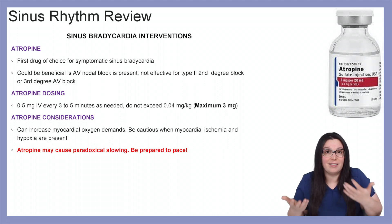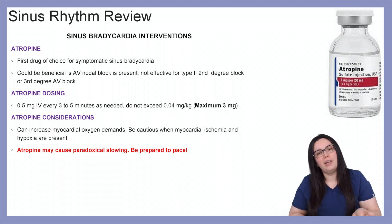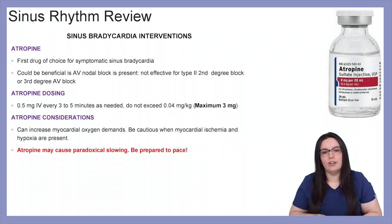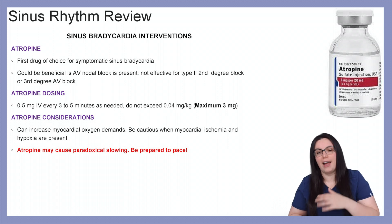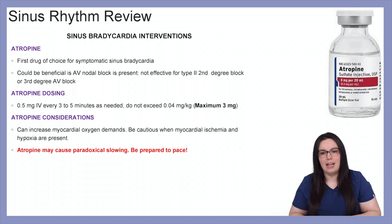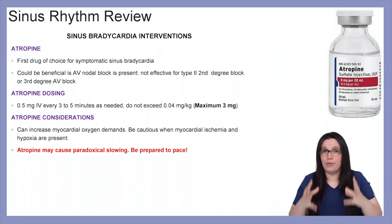You may still see atropine used, but it just might not show benefit. Atropine dosing is 0.5 mg IV every 3 to 5 minutes, not to exceed 0.04 mg per kg with a maximum of 3 mg.